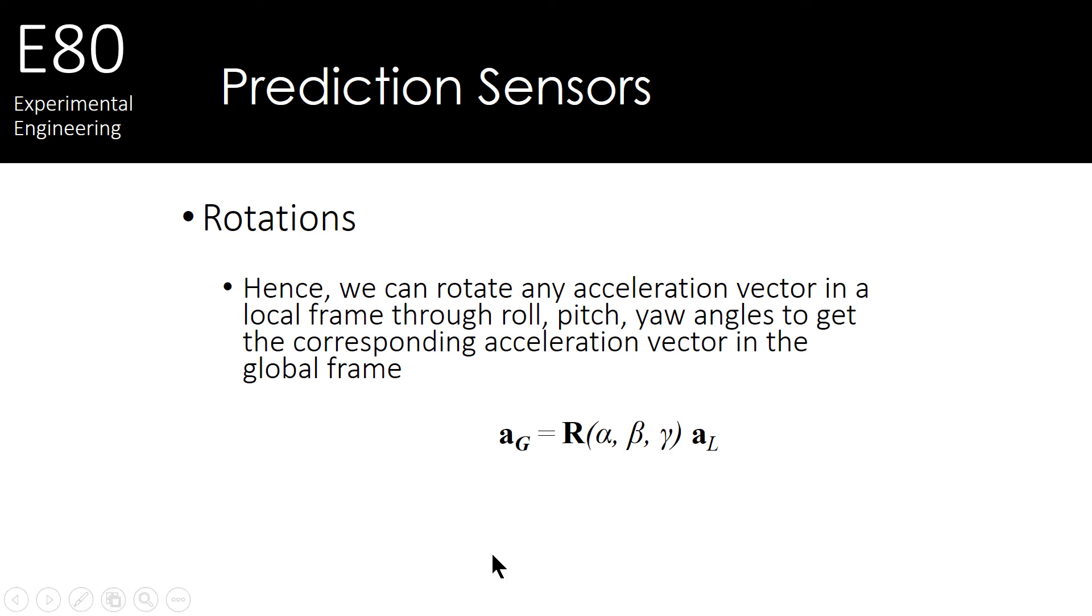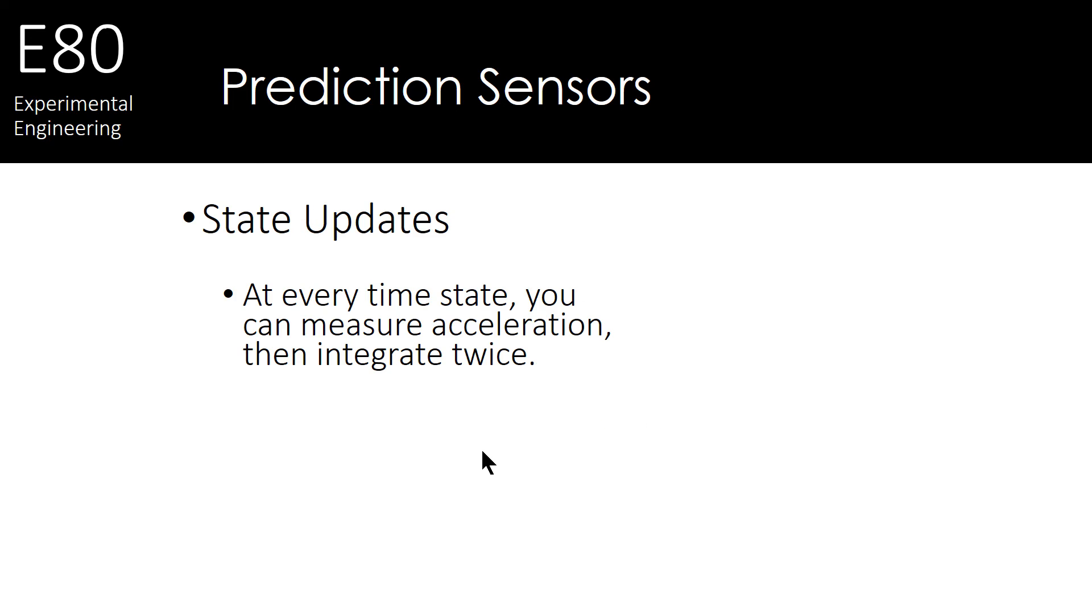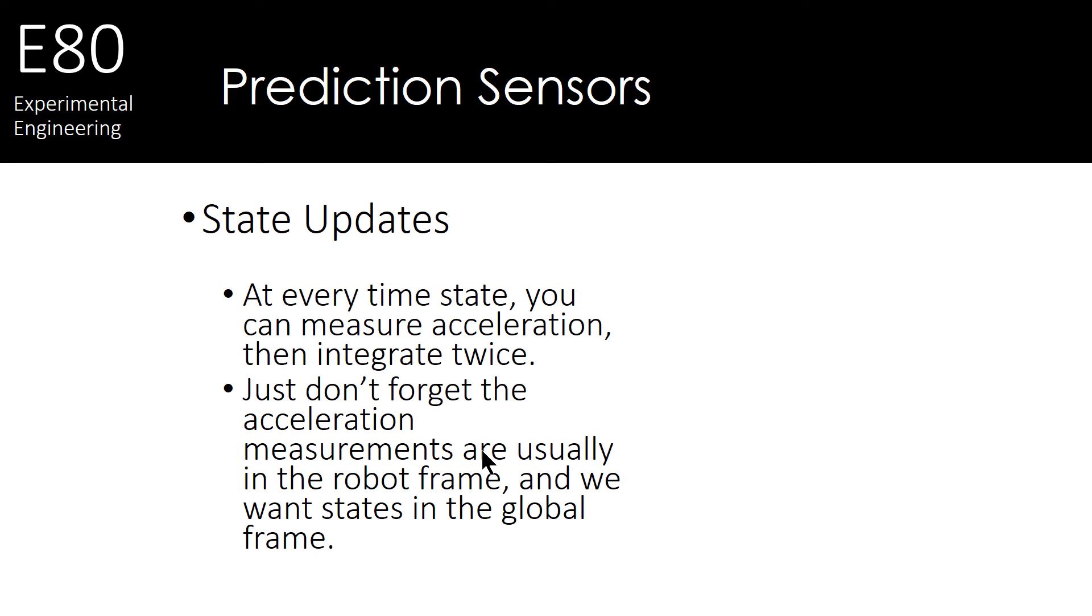Now why are we doing this? Getting local acceleration measurements into global frame measurements, this is going to help with our prediction step. So, at every time step, when we take an IMU measurement of acceleration, we're going to take those accelerations, we're going to convert them to a global frame, and integrate them twice.